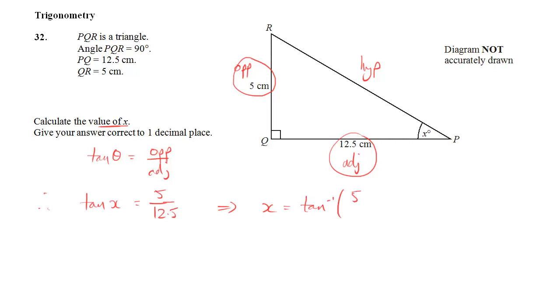So you need to use inverse tan or tan to the minus 1 on your calculator. It's shift tan of 5 over 12.5. And we simply type that in, and it gives us our answer, which is 21.801 degrees. But we want one decimal place, so the answer is 21.8 degrees to one decimal place.